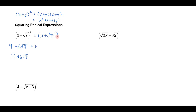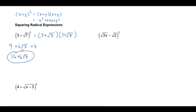To verify by multiplying out: 3 times 3 is 9, the outers give 3√7, the inners give another 3√7 making 6√7, and √7 times √7 is 7. This confirms our answer.